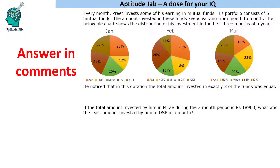Here is a question for you to answer in the comments: If the total amount invested by Preet in Mirai during the three-month period is ₹18,900, what was the least amount invested by him in DSP in a month? You already know the ratios — use them to calculate the values and post your answer in the comments.